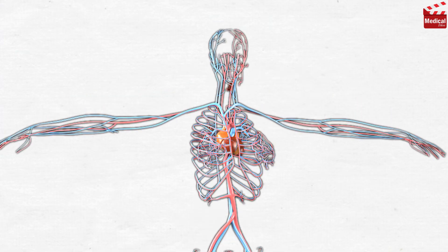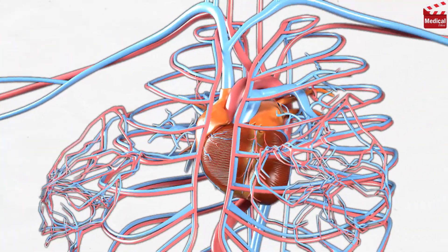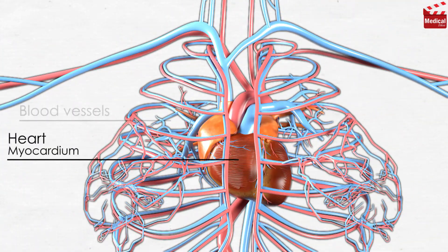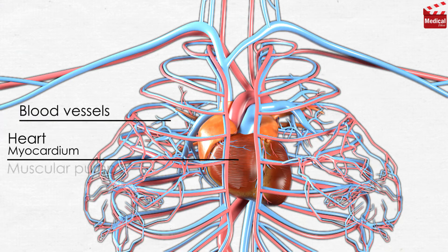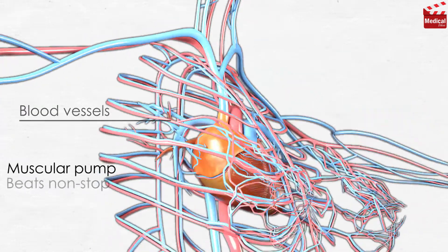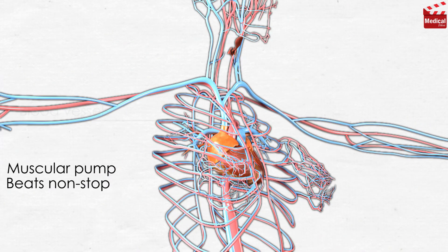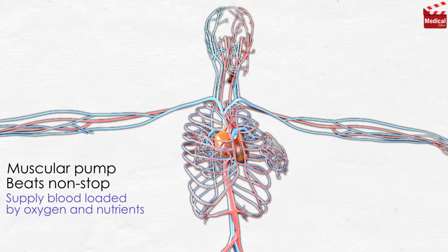The cardiovascular system consists of the heart, or also known as the myocardium, and the blood vessels. The heart is the muscular pump of the body. It beats non-stop for the entire lifetime to supply blood which is loaded by oxygen and nutrients to all tissues of the body.